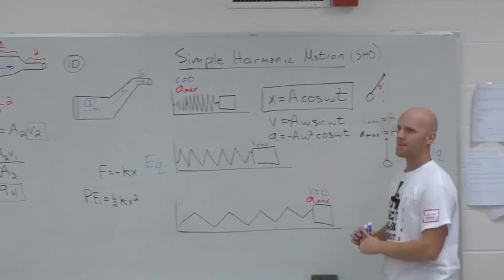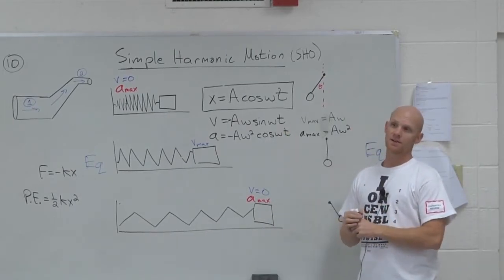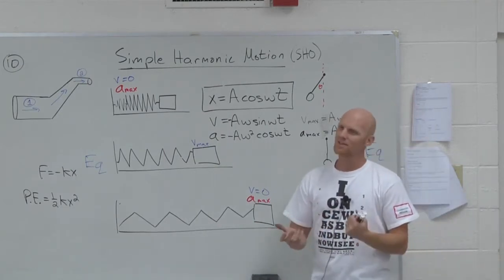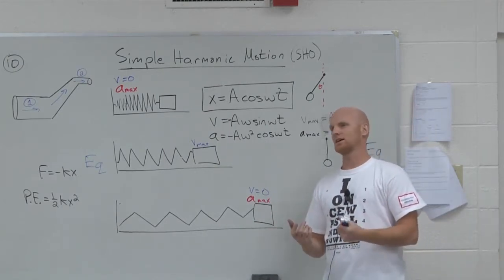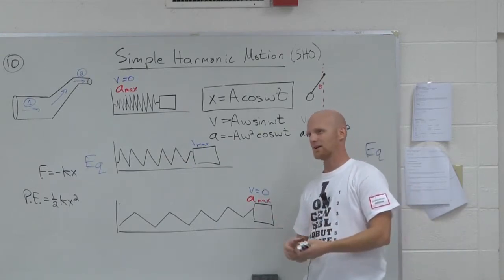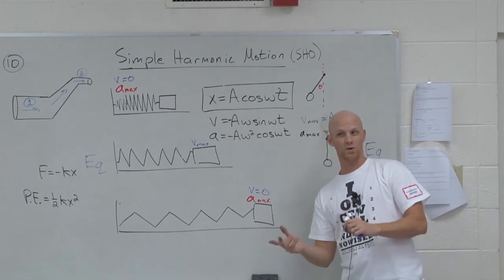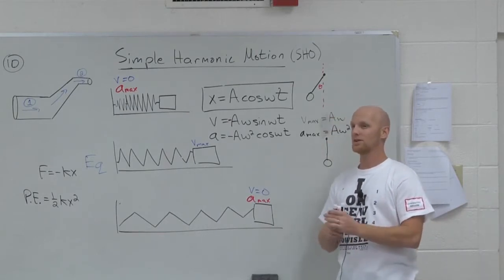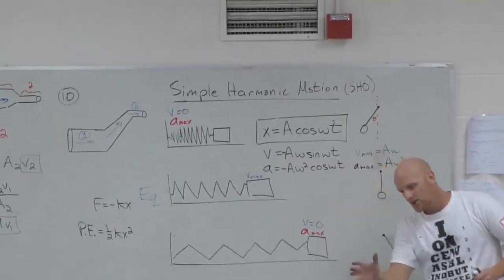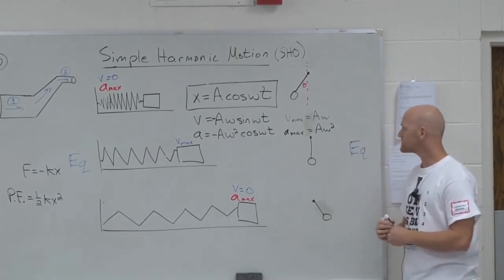Does omega equal velocity? Omega is your angular velocity — it's in radians per second rather than meters per second. It describes how fast the oscillatory motion is being completed, similar to angular velocity in circular motion, dealing with angle per second rather than meters per second.